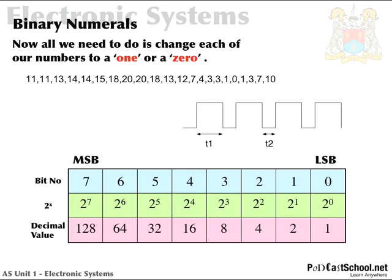The whole point of this is: if we use those numbers, we can make any number by adding them. We can add any combination of these to give us any number that we so desire. So let's take our old example that we had earlier — eleven, eleven, thirteen, fourteen.